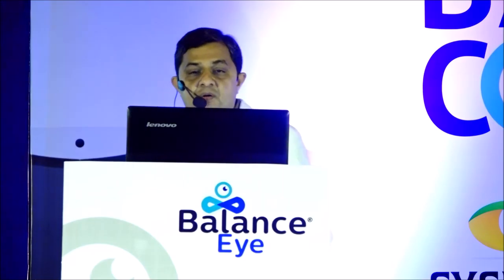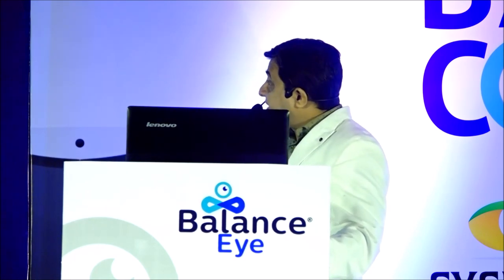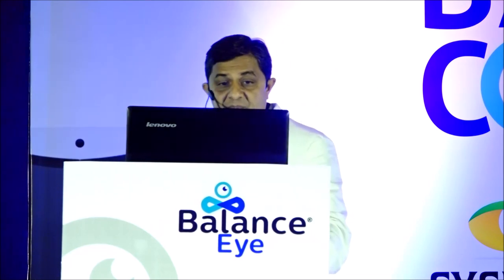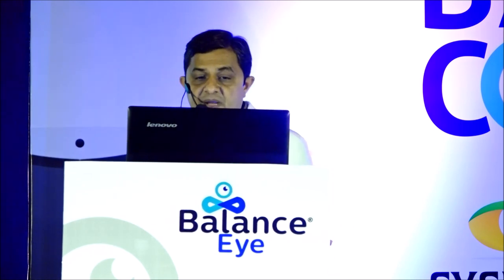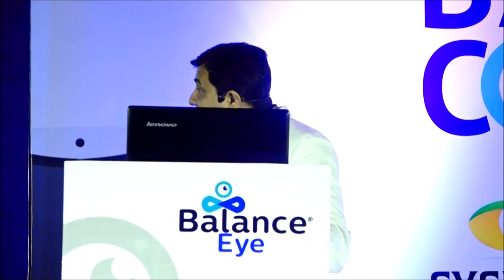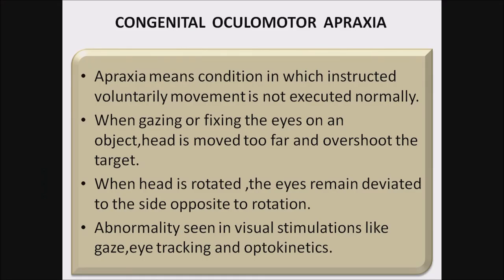Congenital oculomotor apraxia: apraxia means a condition in which instructed voluntary movement is not executed normally. When gazing or fixing eyes on an object, the head is moved too far and overshoots the target. When the head is rotated, the eyes remain deviated to the side opposite the rotation. Abnormality is seen with visual stimuli such as gaze, eye tracking, and optokinetics.